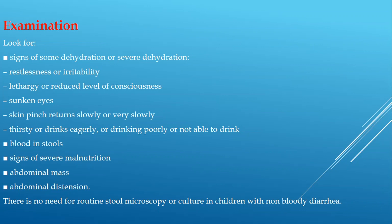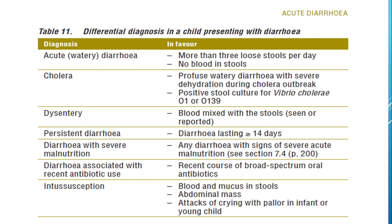Now we look at the table about differential diagnosis in children presenting with diarrhea. Acute watery diarrhea is characterized by more than three loose stools per day with no blood in stool. Diagnosis of cholera is profuse watery diarrhea with severe dehydration during a cholera outbreak, with positive stool culture for Vibrio cholerae O1 or O139.